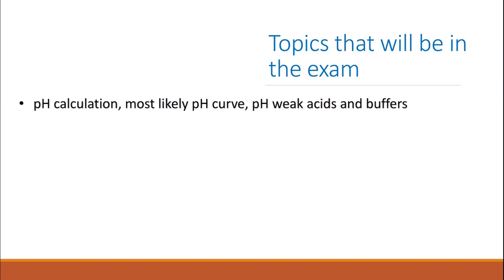I've never seen a Paper 1 exam without a question about pH calculation. Last year the question was about calculating pH for a basic solution, so probably this year they will ask you about the pH of a weak acid. Also, buffers didn't come last year, so they will probably be in the exam this year. And pH curves haven't been in the exam for quite a few years, so they will probably appear this year as well.